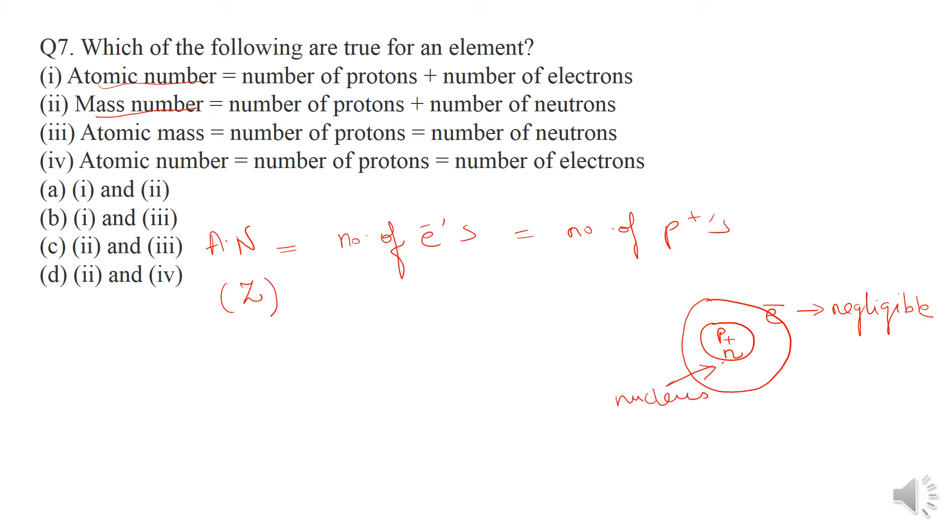In the model of atoms, the nucleus contains protons and neutrons, and electrons revolve around it. Electron mass is negligible, so we say mass of atom is concentrated in nucleus. Therefore, mass number is equal to number of protons plus number of neutrons.